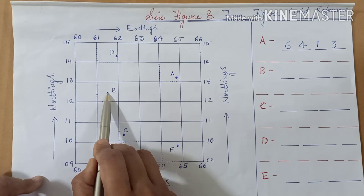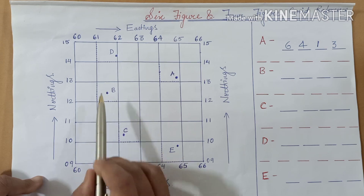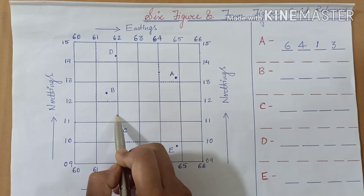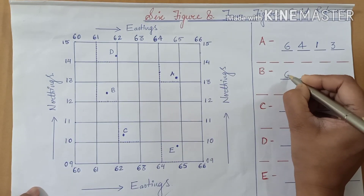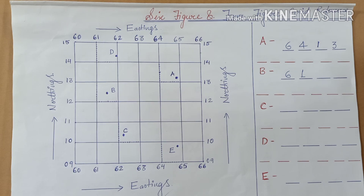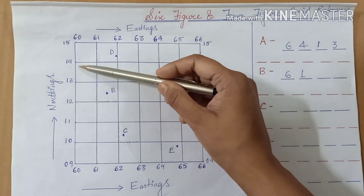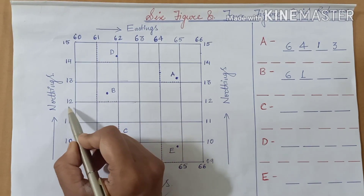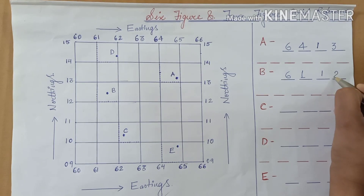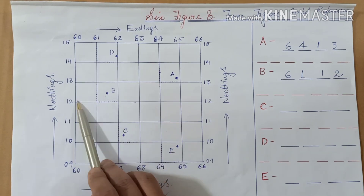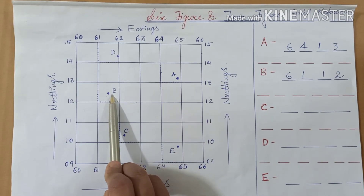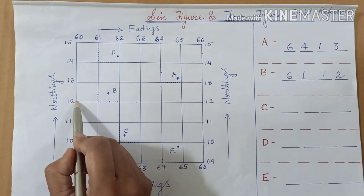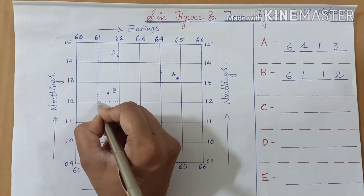Come to point B. If we look at the eastings, point B lies between 61 and 62, so we take the lesser value — 61. Now for the northings, point B is between 12 and 13, so we take the lesser value — 12. Therefore the four figure grid reference of point B is 6112. Where the two lines meet, we call it the coordinate.